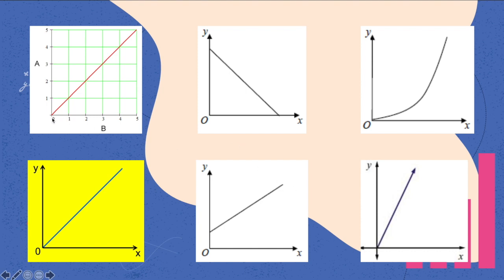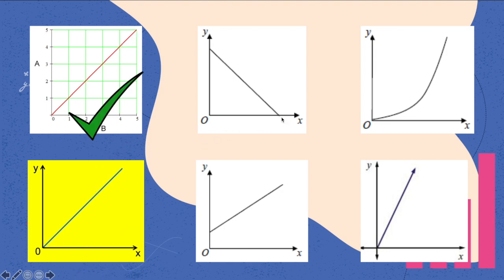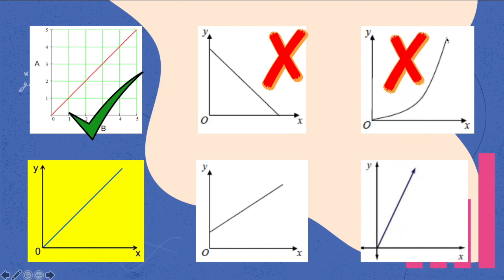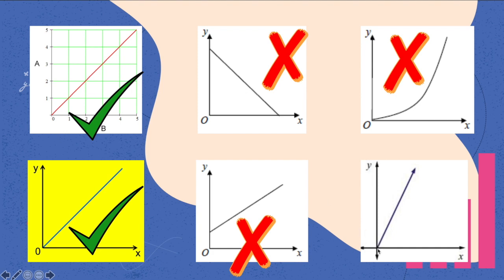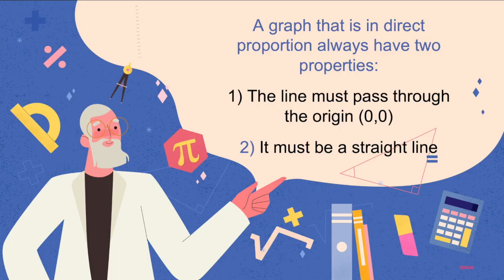This first graph passes through the origin at point (0, 0) and is a straight line, so it is in direct proportion. This next one, whilst it is a straight line, does not pass through the origin, so it isn't. This one passes through the origin but is not a straight line, so it cannot be in direct proportion. This one passes through the origin and is a straight line, so it is in direct proportion. This one is close to the origin but does not pass through it, so even though it's a straight line it is not in direct proportion. Finally, this last one goes through the origin and is a straight line, so it is in direct proportion.